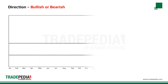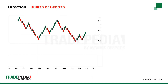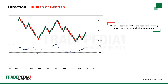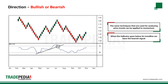Let's look at the direction of the oscillator. Similar to prices, momentum moves in trends. The same techniques used for analyzing price trends can be applied to momentum. When the indicator goes below its trend line, we have a bearish signal. When the indicator goes above its trend line, we have a bullish signal.